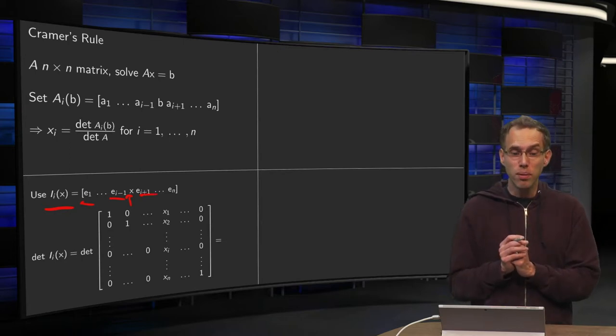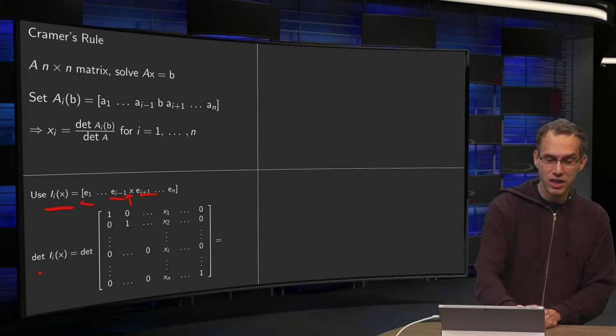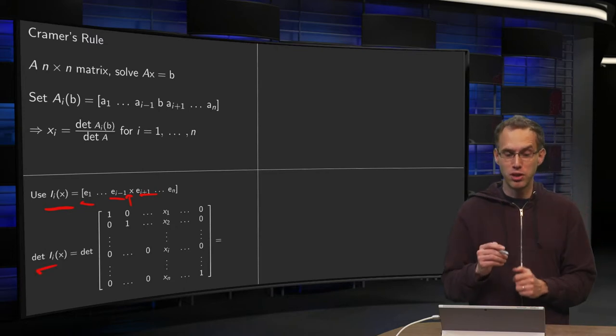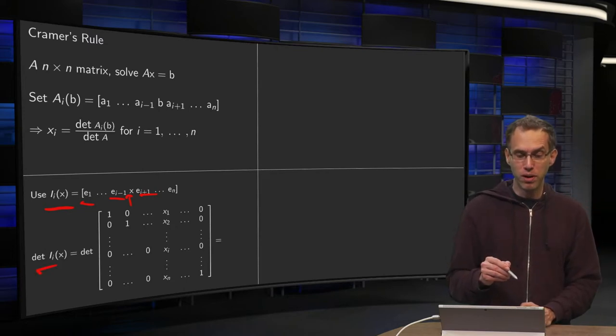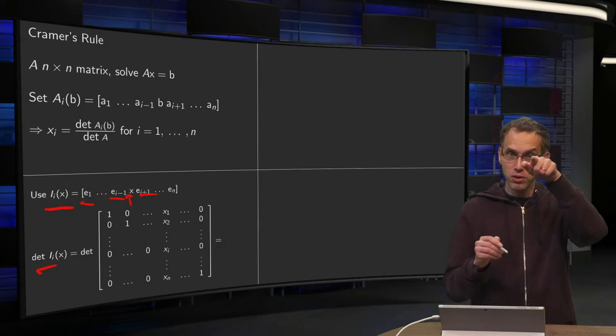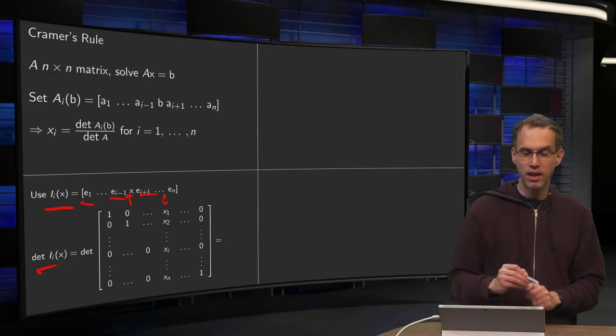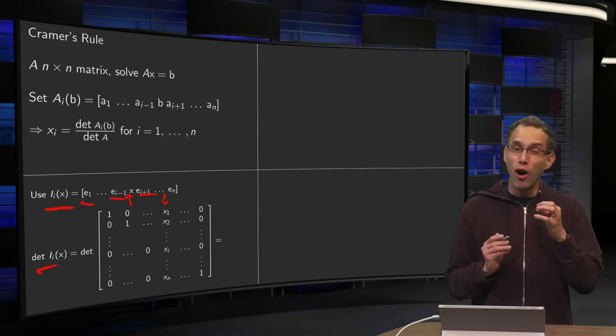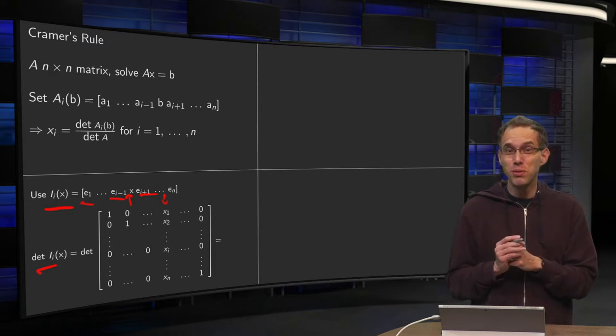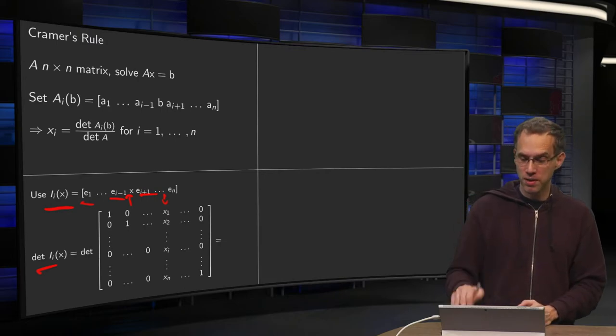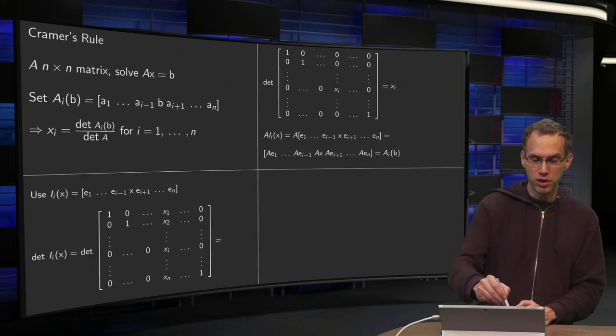Now, this determinant of I_i(x) is actually pretty easy. So how does the matrix look? A lot of zeros and only ones on the diagonal, once on the diagonal, and here you have your column with unknown Xs. However, it is easy to compute this determinant. We can use row reduction steps.